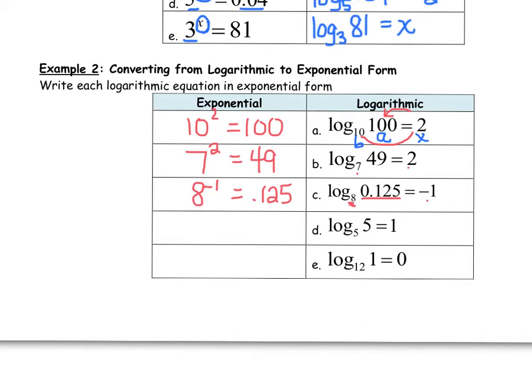I kind of prefer to do it with a little arrow. 5 to the first equals 5. I think it's just faster that way, but that's just me. Last one, 12 to the 0 equals 1. You're always welcome to check those on your calculator.